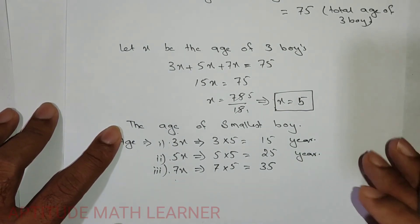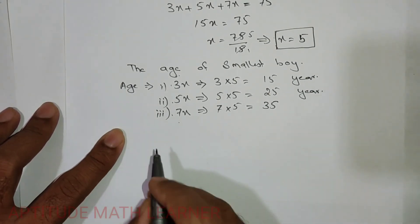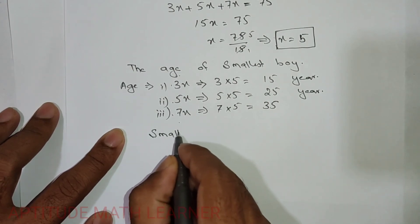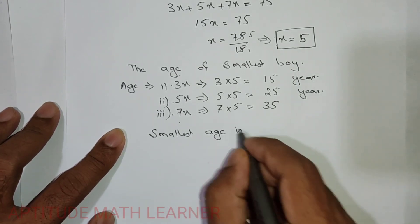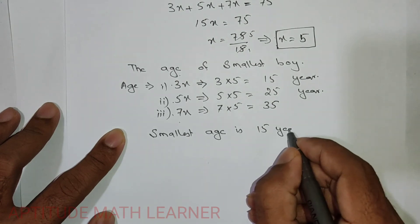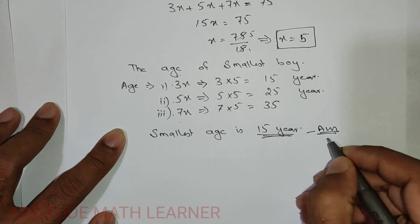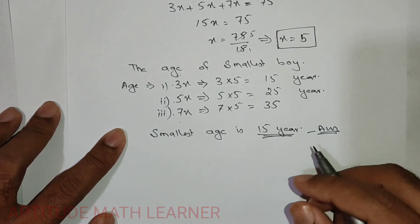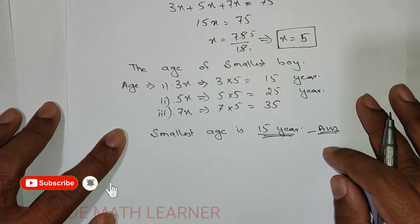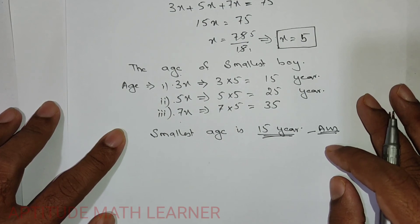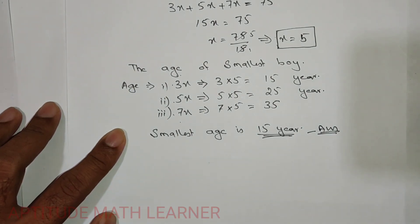The smallest age is 15 years, and this is our final answer. I hope you understood the method for solving this question. If you liked the method, please subscribe, share it, and thank you very much. Hope to see you in the next question.